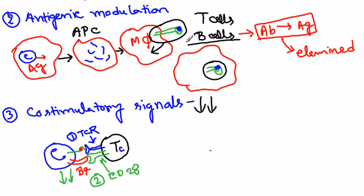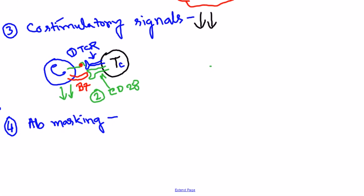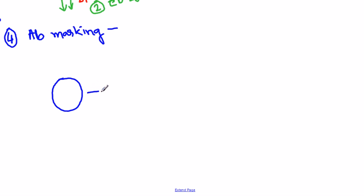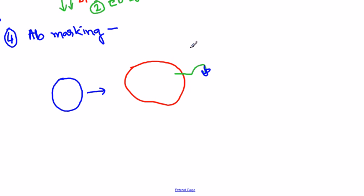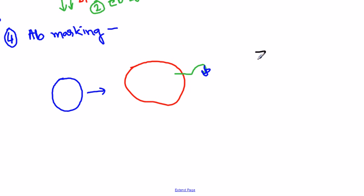B cells produce antibodies that are very specific to react with antigens. These anti-tumor antibodies, made by B cells to go against cancer cells, will come and attach to the antigens presented on the surface. When there are many antigens presented outside via MHC molecules, all the antibodies come and attach to these antigens.